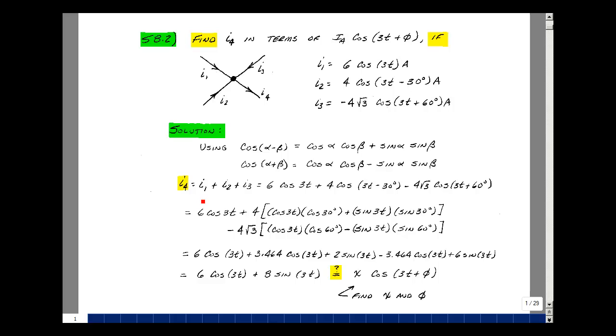So I4 is then equal to I1 plus I2 plus I3 because those are entering the node and I4 is leaving. I want to add these together, so let me rewrite this expression using a trig identity where the cosine of alpha minus beta is cosine alpha cosine beta plus sine alpha sine beta, and with a plus there's a minus sine here.